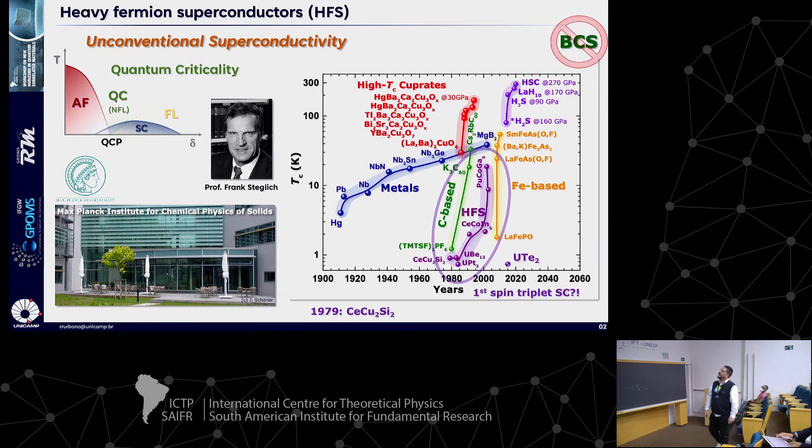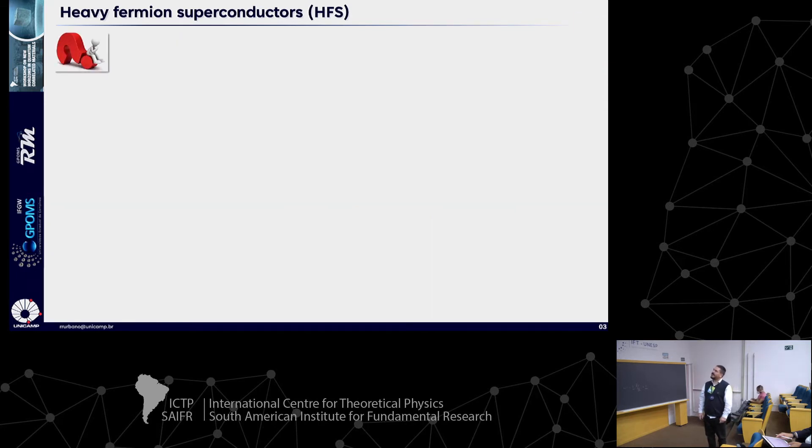Just in the last conference, the strongly correlated electron systems conference, there was almost a whole section just talking about uranium ditelluride recently discovered. They claim that it's going to be the first spin triplet superconductor. The greatest question in these materials is how the transition metal, usually in this matrix here, changes the hybridization, the cerium 4F hybridization, and then the ground state in these materials.